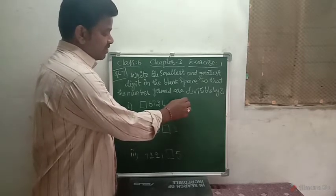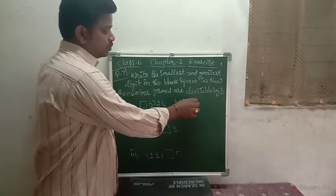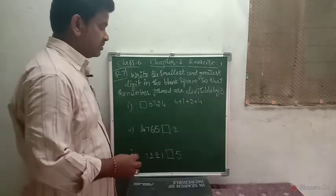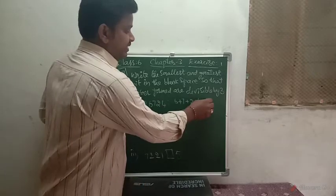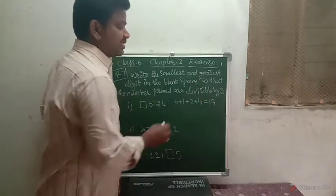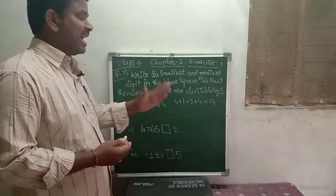6 plus 7 plus 2 plus 4. How much is it? 6 plus 7 is 13, plus 2 is 15, plus 4 is 19.